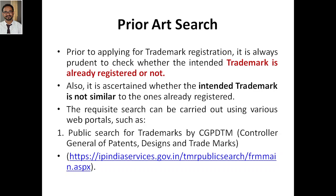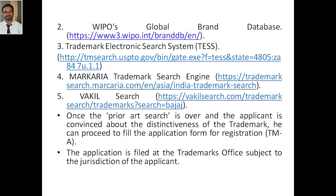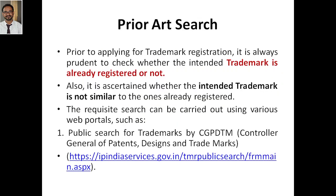We need to check if an already registered trademark exists that is the same as ours. The requisite search can be carried out on many portals. The first one is CGPDTM — that is Controller General of Patents, Designs and Trademarks — where a public search for trademarks is available at ipindiaservice.gov.in, and there is a separate public search portal under that.